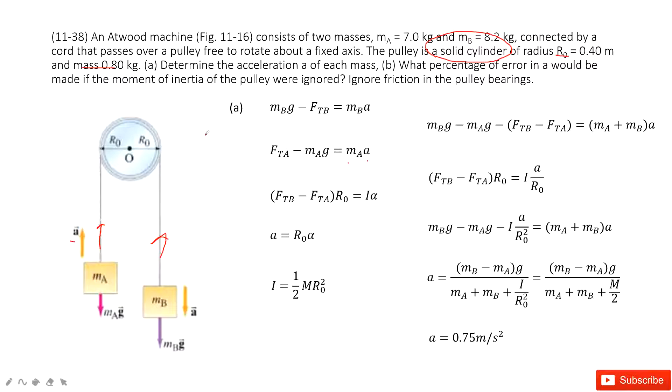The next one, we look at the pulley. For the pulley, it does the rotation. So for rotation for this pulley, we can see it should be the difference of the force. So FtB minus FtA times R0. This is the net torque.